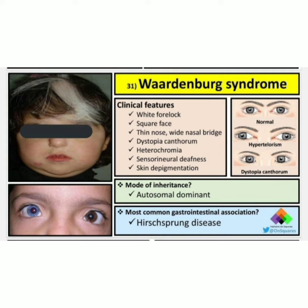Look at the image of the child — there is white forelock and the baby has a square face, thin nose, white nasal bridge, dystopia canthorum, heterochromia, and the patient has sensorineural deafness and skin depigmentation.